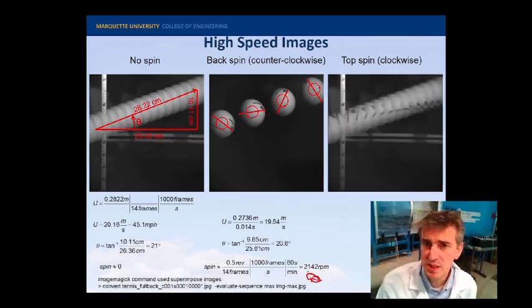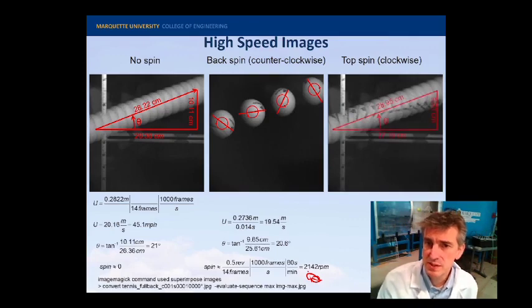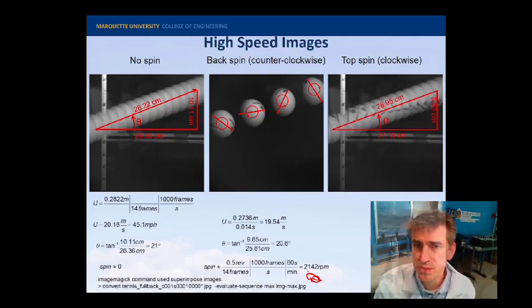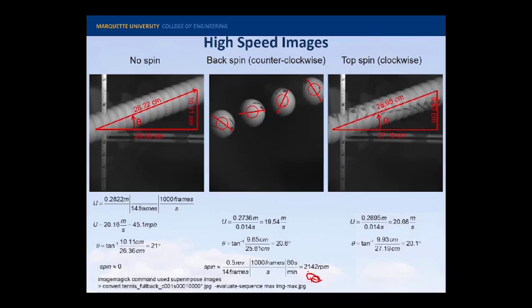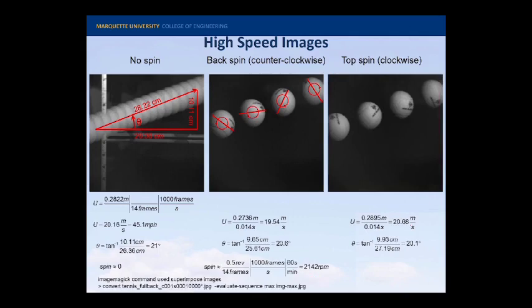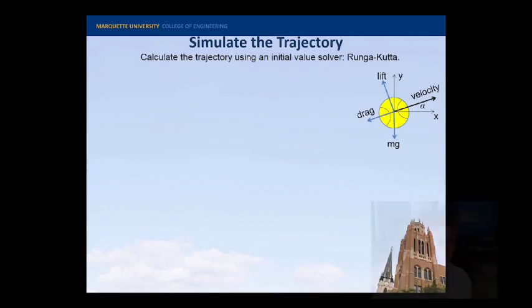I can do the same thing with the topspin. I can first calculate its distance traversed over those frames and its angle. And again, I'm getting about 20 meters per second and an angle of 20 degree launch. And then calculate the spin based on what we see, based on the logo really. And it looks like it'd be fair to call that about a half a revolution over the 15 frames as well. So, we get about minus 2142. Remember this whole minus plus sign when it comes to lift and drag data can be problematic.